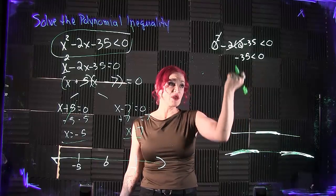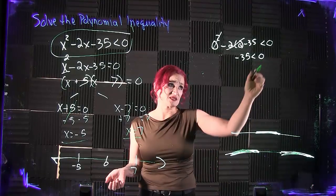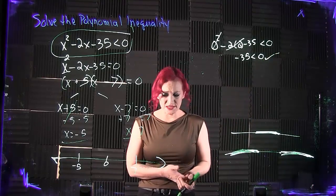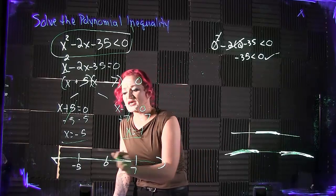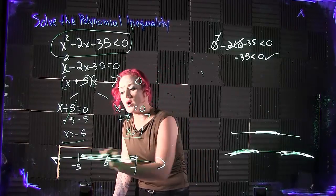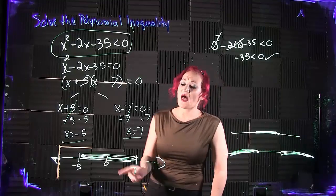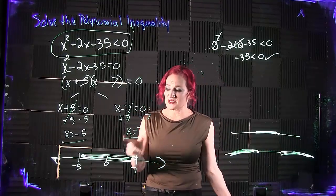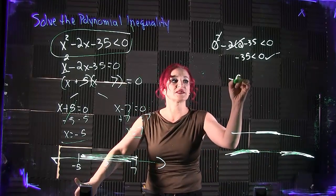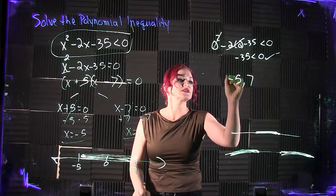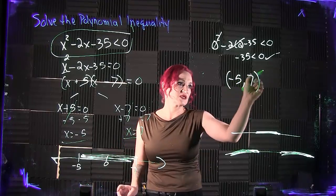Negative 35 is definitely less than 0. A negative number is less than 0. So that means this section, where I tested 0, does work. That means my solution is going to be this negative 5 to the 7, with parentheses wrapped around it.